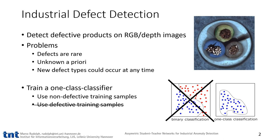Many defects are rare and in the beginning you may have no single defective example. Even if you would, there could come up new defects after time. Due to this lack of data, a supervised classification is not helpful or applicable for defect detection. This is why you have to perform a one-class classification, also known as anomaly or novelty detection.